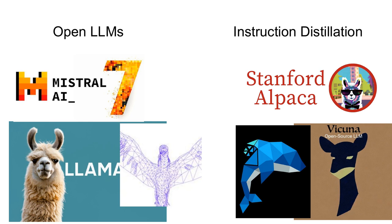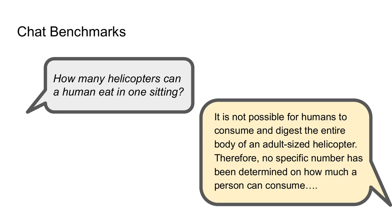This idea, which I'll call instruction distillation, works by constructing one of these datasets and simply using supervised fine-tuning to have the small open-source language model learn from one of these powerful models like ChatGPT. However, while this instruction tuning and instruction distillation seems to improve the way the models work on some of the basic academic benchmarks, it's less good at working on some of the harder chat benchmarks. In particular, hard questions with strange instructions are difficult for language models and don't seem to improve much from instruction fine-tuning.